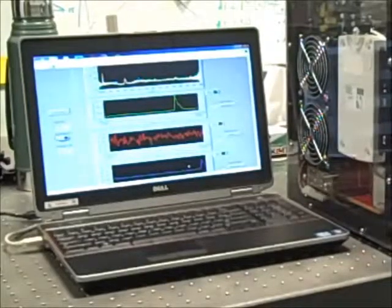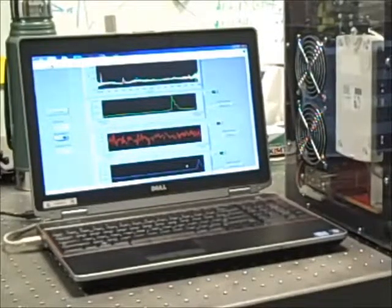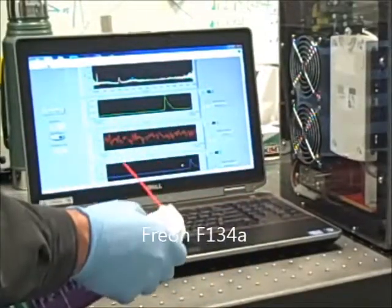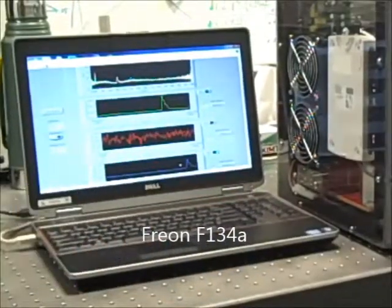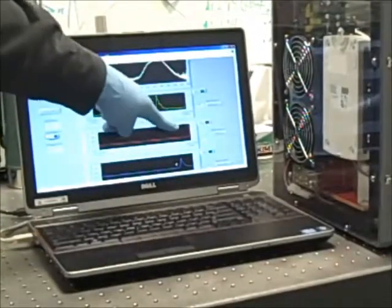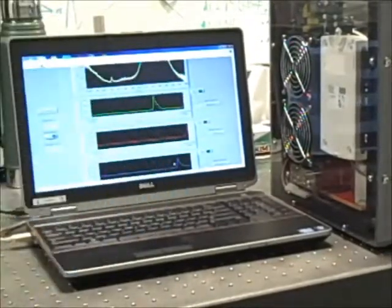For the final demonstration in this video, we use a can duster, which contains Freon F134A. A small squirt directed away is more than sufficient, and the red trace, which is a plot of this Freon concentration, records the momentary peak in this chemical species.